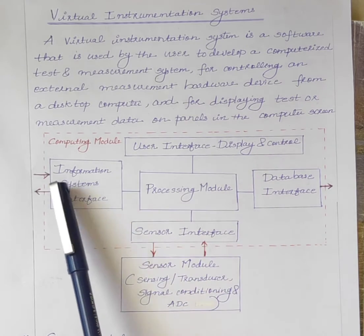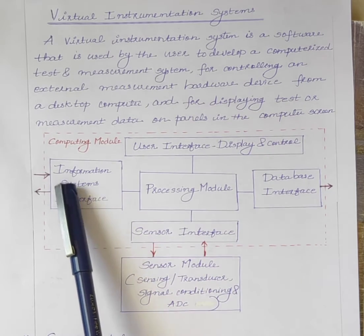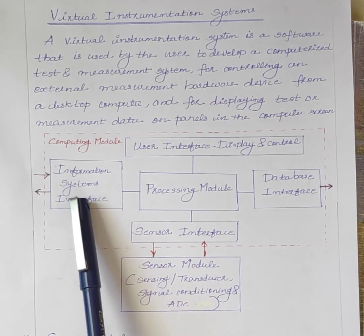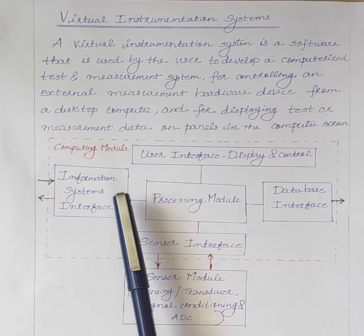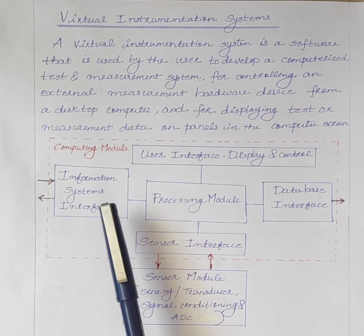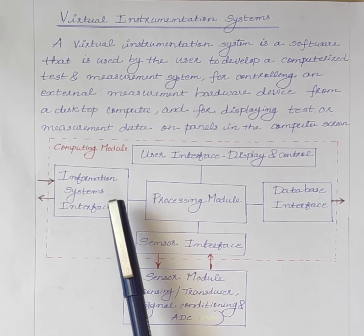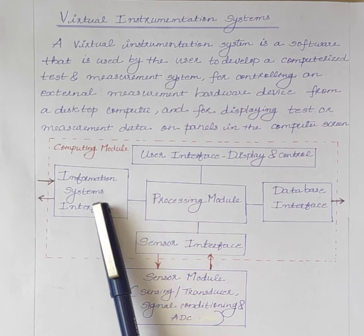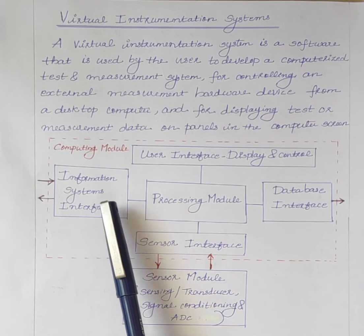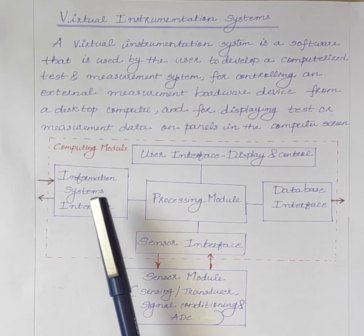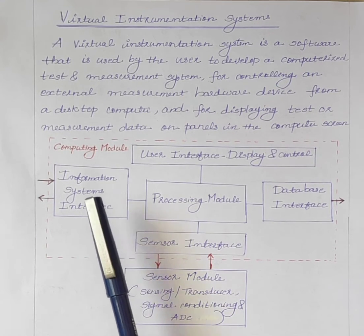Next one is the information system interface. Information system interfaces are used for decision support, real-time alerts, predictive warnings, etc.